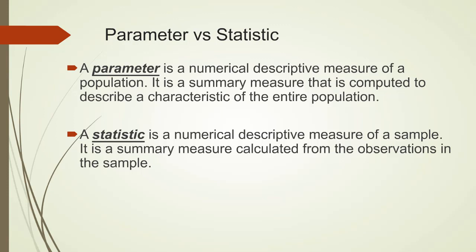The next pair is parameter and statistic. A parameter is a numerical descriptive measure of a population. It is a summary measure that is computed to describe a characteristic of the entire population. A statistic is a numerical descriptive measure of a sample. It is a summary measure calculated from the observations in the sample. A parameter is a fact about a population. Say, about half of the employees in the aforementioned company are female, while a statistic is something we actually measure about a sample. For instance, 82 out of 150 employees assembled, or women.